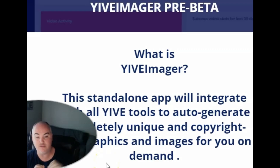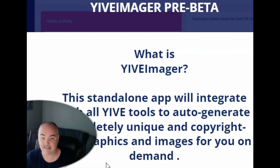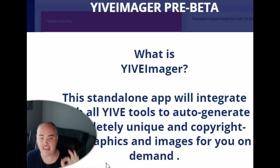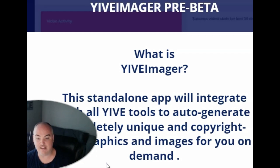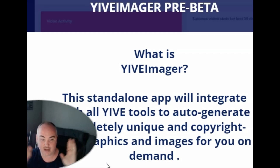You will be able to use this with all Yive products — confirmed. There will be a standalone interface, so if you don't have any Yive products at all, you'll still be able to create images in the standalone Imager interface. You will also have API access, so if you have some sort of app, you can integrate it. The Yive Imager pre-beta includes 1,000 images per month. If you need additional images in a given month, you'll be able to get a one-time package of images that don't expire, and every single month your quota will refresh.